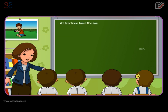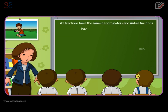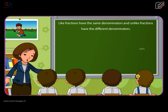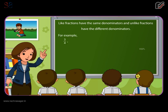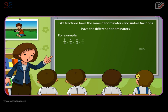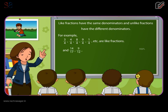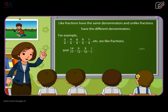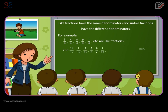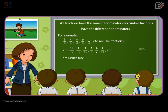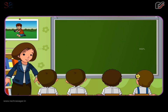Like fractions have the same denominators and unlike fractions have different denominators. For example, three by four, four by four, eight by four, nine by four, one by four, etc. are like fractions. And fourteen by seventeen, nine by twelve, nine by ten, three by six, nine by seven, one by fourteen, etc. are unlike fractions.